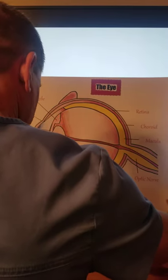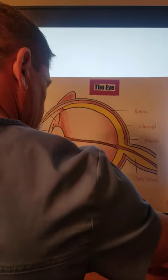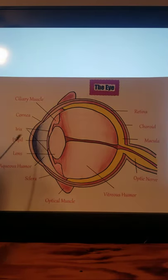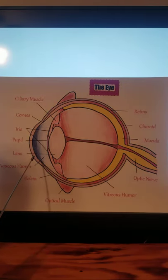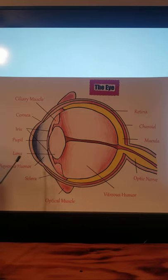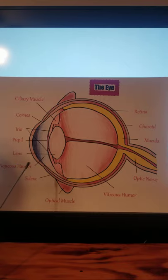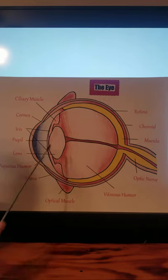These are the structures of the eye. We have the cornea in the front of the eye — it's the clear, transparent front part of the eye that covers the iris, pupil, and anterior chamber, and provides most of the eye's optical power.